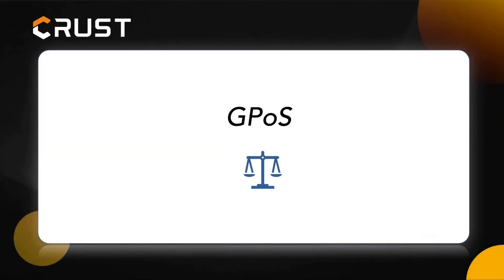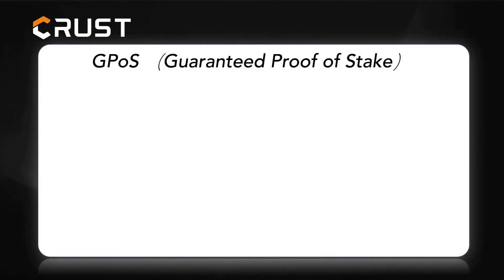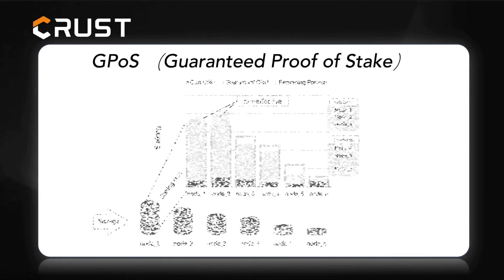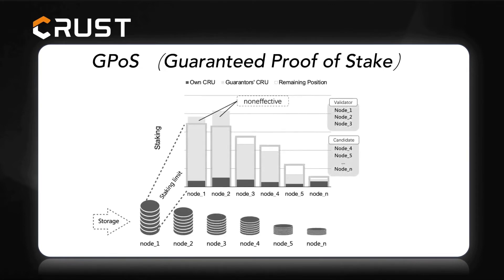Next, I'll introduce you to the GPOS consensus mechanism. This chapter will be helpful for those who want to become a CRUST node or CRU holder. The blockchain consensus in the CRUST network is GPOS, which stands for Guaranteed Proof of Stake. GPOS is a kind of POS consensus mixed with POW. Under this mechanism, two types of assets — storage resources and CRU tokens — are both required to become a node.